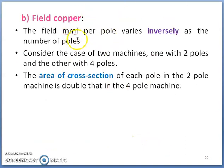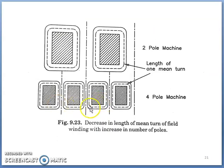Coming to field copper: the field MMF per pole varies inversely as the number of poles. If the number of poles is increased, then the field MMF per pole will reduce. Because of that, the cross-sectional area of each pole in a two-pole machine will be two times that of a four-pole machine — it is double because the flux per field MMF per pole is less for a four-pole machine. Hence, a two-pole machine requires more cross-sectional area to handle that flux flow. This image shows what happens to the length of the mean turn with increase in number of poles — the mean turn length for a two-pole machine is more than for a four-pole machine.